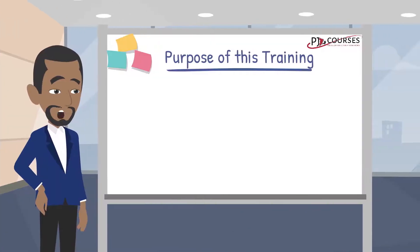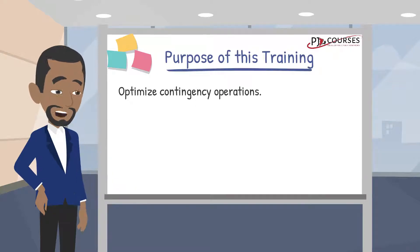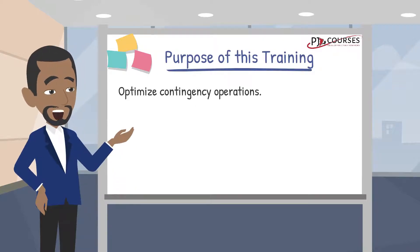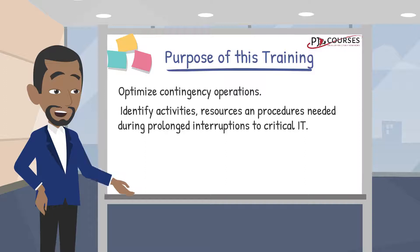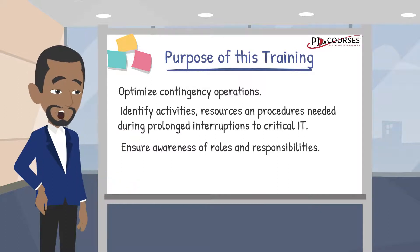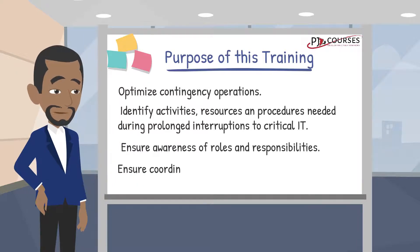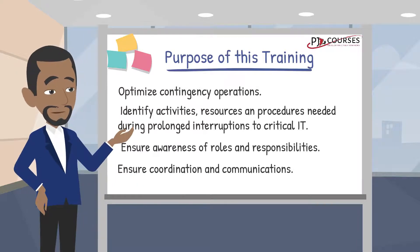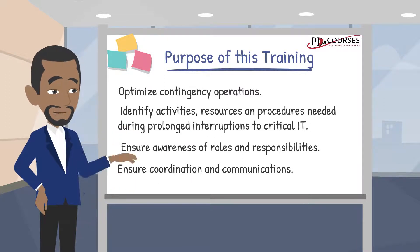We are providing you with this training to optimize the effectiveness of your contingency operations. Although we cannot create a plan for every potential system disruption, this training will identify activities, resources, and procedures that may need to be carried out in the event of a prolonged interruption to normal operations. This training will also make you aware of your role and responsibilities, as well as the role and responsibilities of other staff members, and help you understand how to coordinate with other staff members and external points of contact that will participate in contingency planning activities.